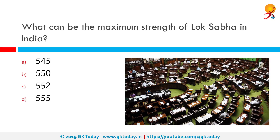What can be the maximum strength of Lok Sabha in India? The correct answer is 552. The maximum strength of Lok Sabha is 552 members, of which 530 are elected from states, 20 are elected from union territories, and 2 are nominated by the President from the Anglo-Indian community if the President feels that the community is not adequately represented in the house.